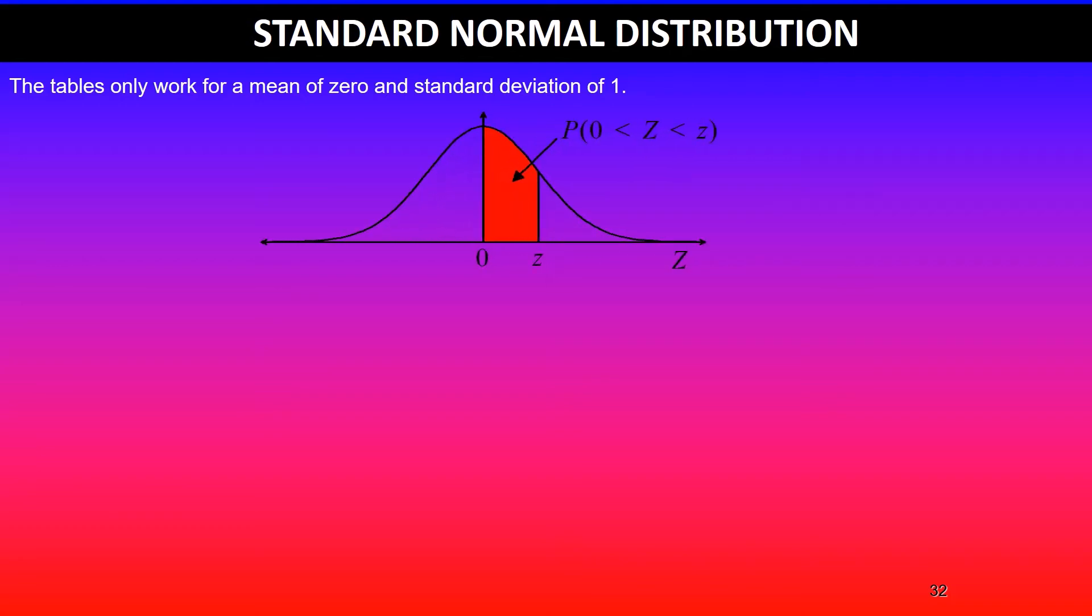So if you are looking at the tables, please take note that it only gives you the value from the mean, which is 0, to a chosen z value.